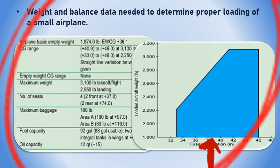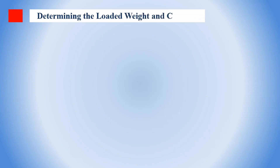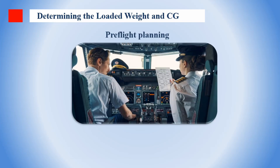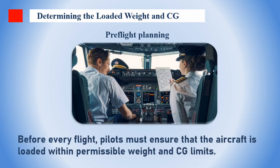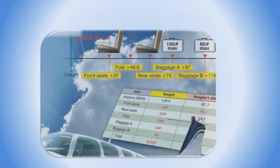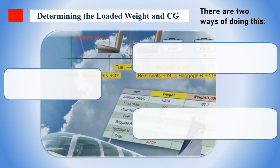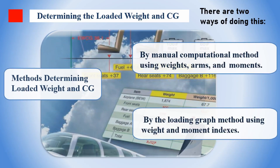Now let's get down to business — how do we figure out the loaded weight and CG of the aircraft? It's all about pre-flight planning. We need to make sure the aircraft is loaded safely within allowable limits. There are two main methods: one, the computational method, and two, the loading graph method.